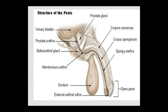Looking at the penis structure, you can see the urinary bladder, prostatic urethra, with two prostates on both sides, and the prostatic vertebra. Then there is the membranous urethra leading to the penis body, which contains the corpus cavernosum, corpus spongiosum, and the spongy urethra, with the glans penis at the tip.